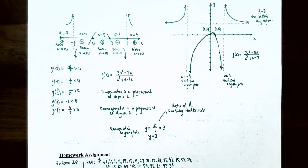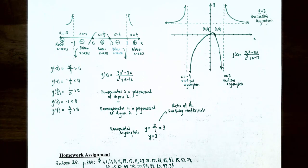This finishes our video on graphing rational functions. We've analyzed behavior near x-intercepts, holes, and vertical asymptotes, determined horizontal and oblique asymptotes and whether the graph intersects them, and graphed rational functions with all intercepts, holes, and asymptotes labeled. If you have questions about any examples or the homework, please let me know. I'll see you in the next video when we talk about solving polynomial and rational inequalities.